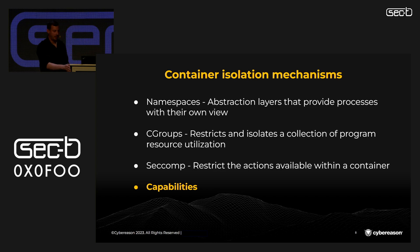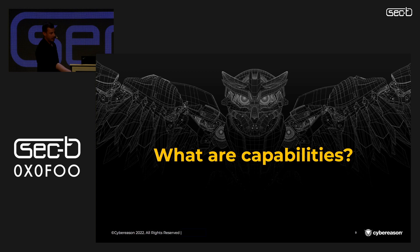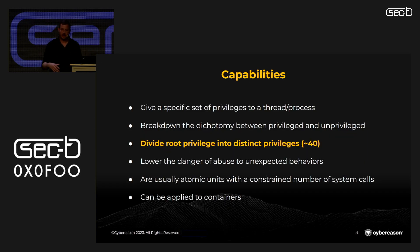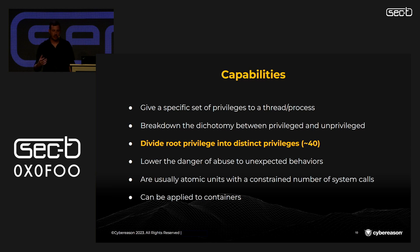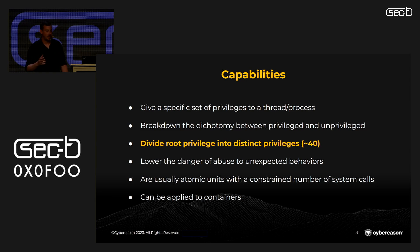And lastly, we have capabilities. Capabilities provide the ability to give a specific set of privileges to a process. They break down the dichotomy between privileged and unprivileged — the all-or-nothing model — into logical groups of privileges. All privileged actions have been categorized into approximately 40 capabilities, meaning a process can use only a small set of actions for those that are needed, lowering the danger of abuse. In other words, the purpose of capabilities is to divide root privileges into distinct ones. Capabilities can be applied to container processes, and all processes in the container can inherit its capabilities.